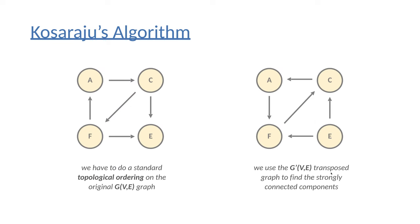How do we get the transposed graph? We just have to consider all the edges and revert them. In the original graph, for example, vertex A is connected to vertex C, and vertex C is connected to vertex F and vertex E. In the transposed graph, the edges have been reverted: vertex A is pointing to vertex F, vertex C is pointing to vertex A, and vertex E is pointing to vertex F and vertex C.